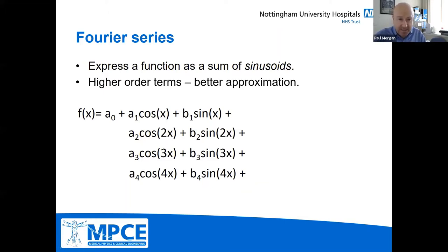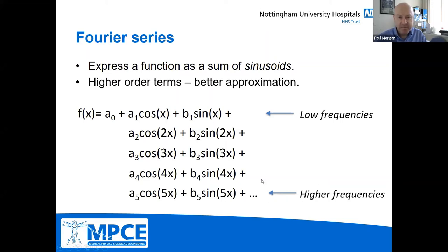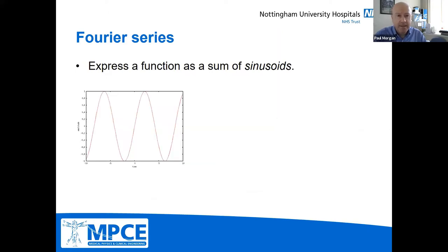Unlike the power series, this is a continuous series. The first term — just cos x and sin x — is a low frequency sinusoid wave, whereas the higher order terms, where we have cos 5x and sin 5x, are higher frequencies. Our function is a sum of low order frequencies plus higher and higher order frequencies, and we have coefficients a and b which are the weightings as to how much we weight the sum towards the lower or higher frequencies.